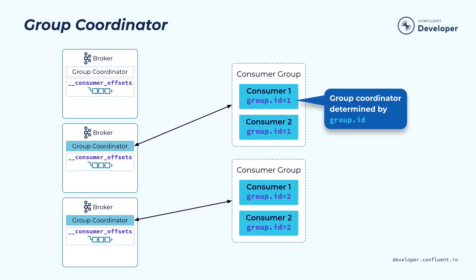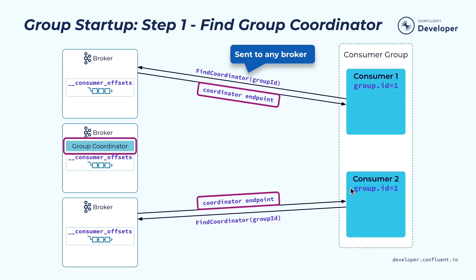The workforce behind consumer group is a concept called group coordinator. The group coordinator is responsible for coordinating the communication among all the members in the consumer group, and is also responsible for coordinating the assignment of the workload to those members. In a typical Kafka cluster, there will be multiple group coordinators, and this allows the load from different consumer groups to be evenly distributed among those different coordinators.